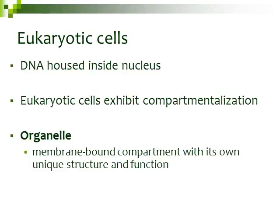Eukaryotic cells have their DNA housed inside the nucleus, so they have a membrane-bound nucleus. Eukaryotic cells also exhibit compartmentalization, meaning they have structures called organelles. These organelles are membrane-bound compartments that have their own structure and their own function. Just like the prokaryotic cell section, we're going to be focusing on the structure and function of these different parts in our eukaryotic cells.